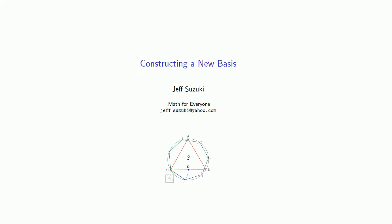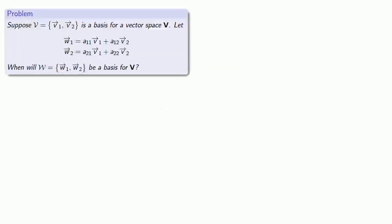So what happens if we don't like the basis vectors that we have? We can construct a new one. Or can we? Let's consider the simplest case where our vector space has two basis vectors.